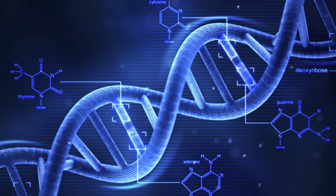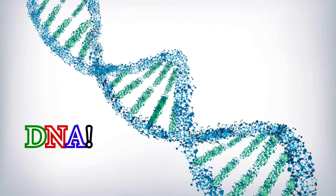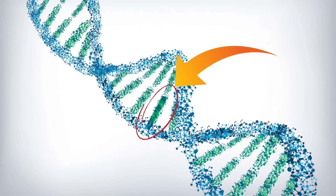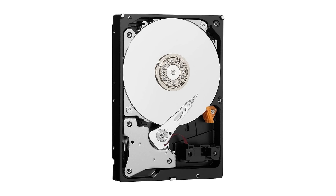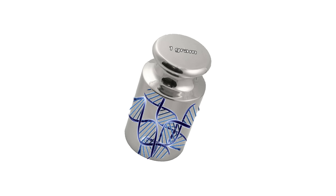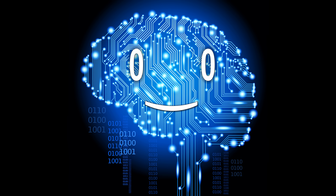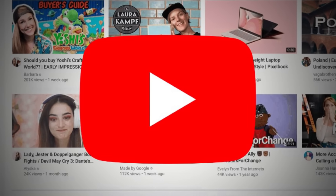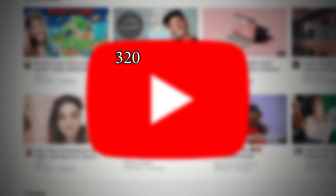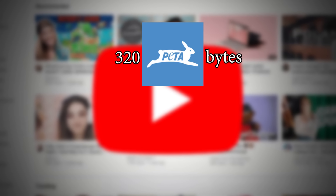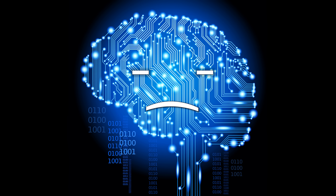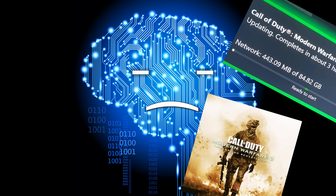This data is stored in a special molecule called DNA. The unit of memory in a DNA molecule is the gene, which is way cooler than those pathetic bits of any hard drive. In a single gram of DNA, you could store 215 petabytes, or 215 million gigabytes. For reference, to store all the videos from YouTube you would need 320 petabytes of storage, or a gram and a half of DNA — still not enough for the new Call of Duty update.